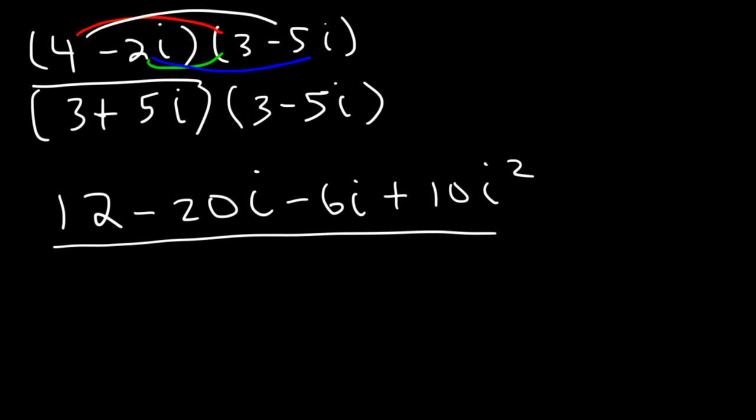On the bottom, the two middle terms will cancel. So what's going to be left over is 3 times 3, which is 9. And also 5i times negative 5i, which is negative 25i squared.